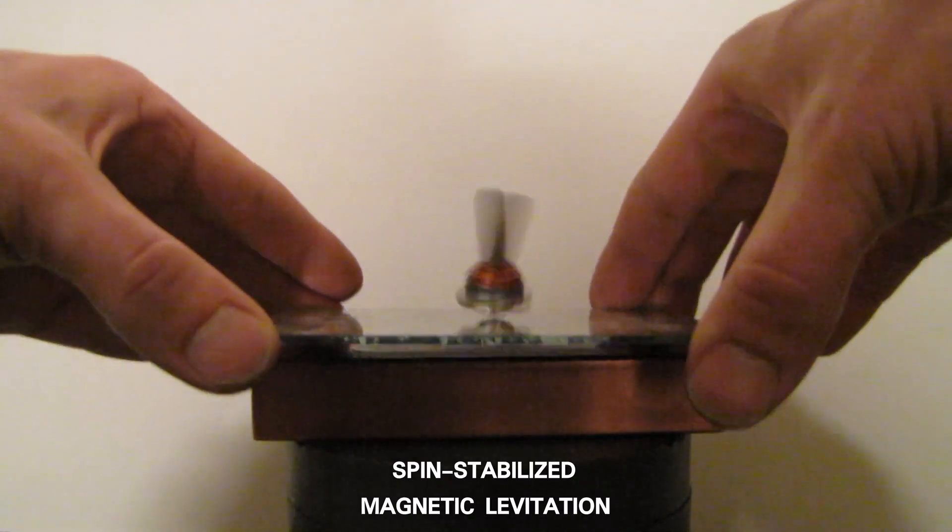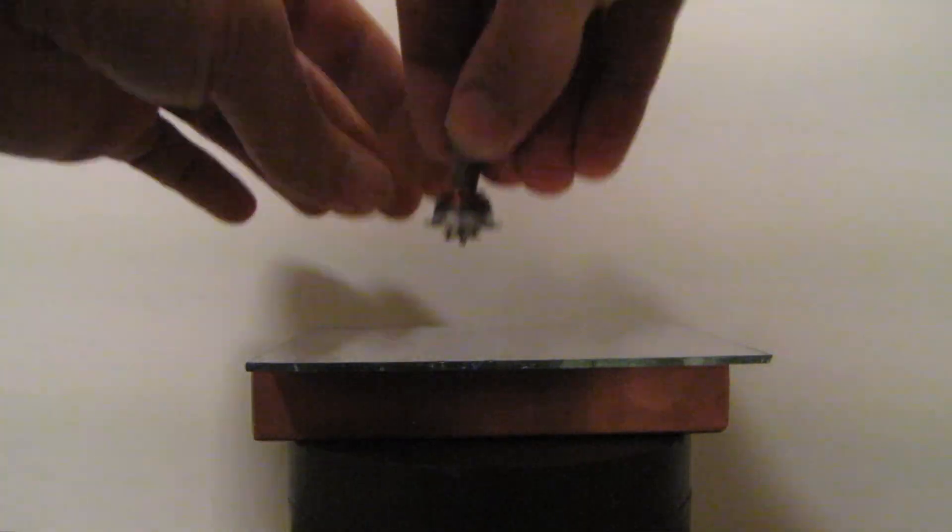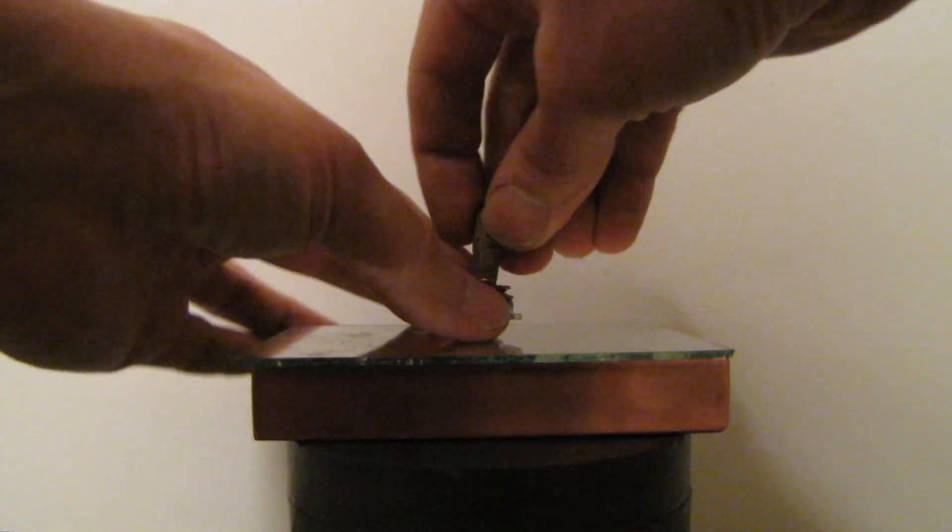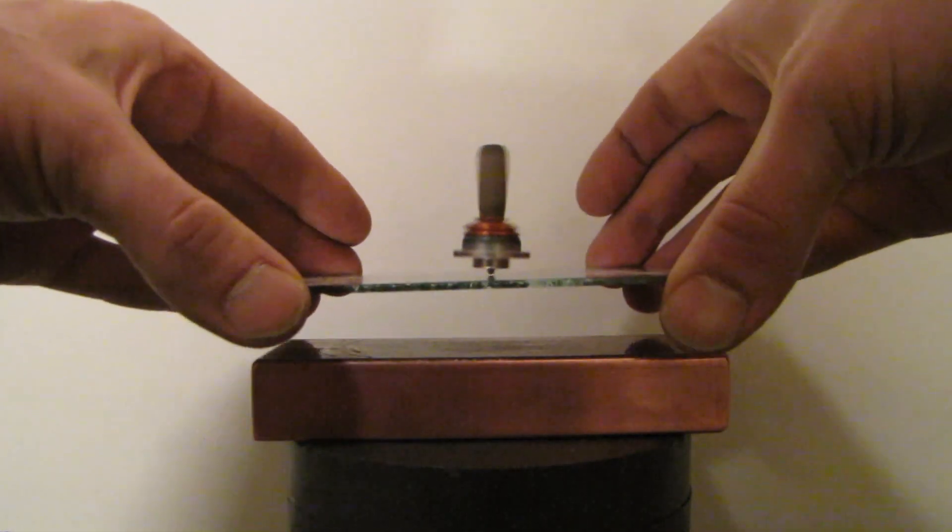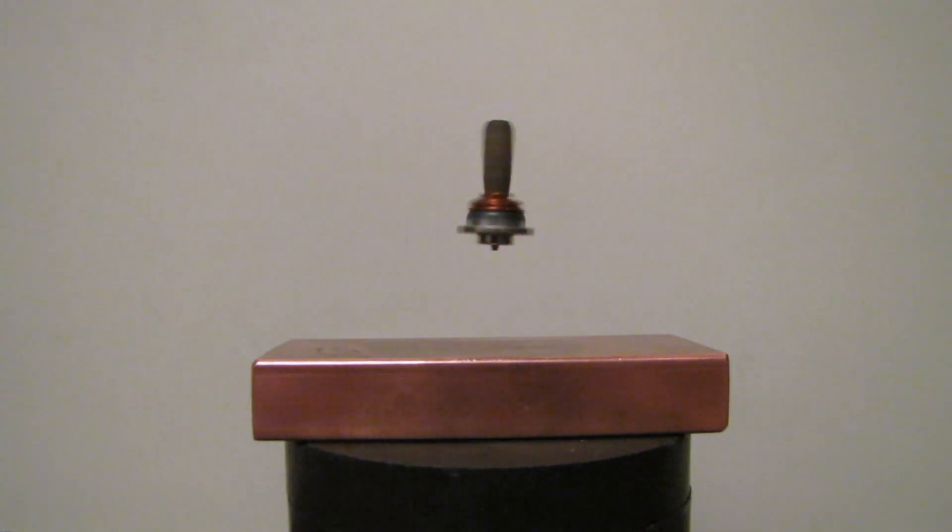A spinning magnet is levitated via magnetic repulsion above another magnet and stabilized by gyroscopic effect. The spinning top acts as a gyroscope and prevents its toroidal magnetic field from fully aligning itself in the same direction as that of the supporting opposing field of the magnetic base.